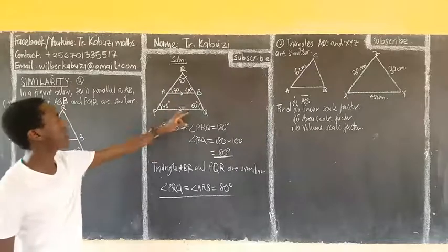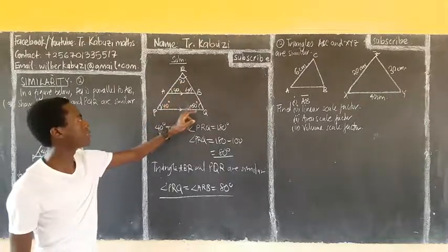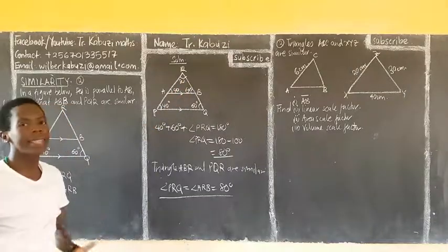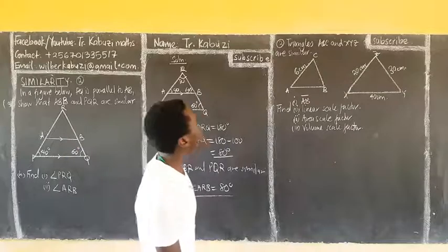So, this triangle has 40, 60, and 80. It also has 40, 60, and 80, so they are similar. And in that case, they are equiangular.